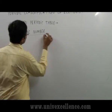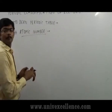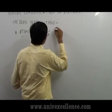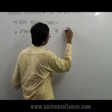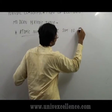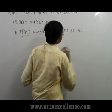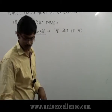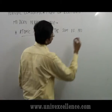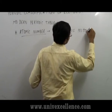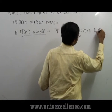The atomic number can be defined as the sum of protons and neutrons.